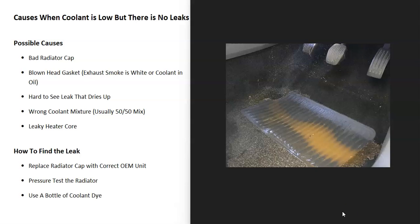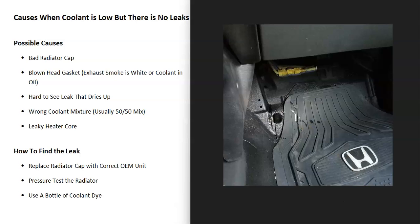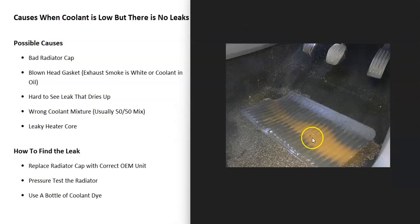The next possible cause is a leaking heater core, which is located up inside the vehicle underneath the dashboard. Radiator fluid flows through the heater core to heat the vehicle in cold weather. Usually if the heater core is leaking, you'll smell coolant in the air inside the cabin, and quite often you'll see coolant coming down onto the floorboards, which can also cause discoloration.